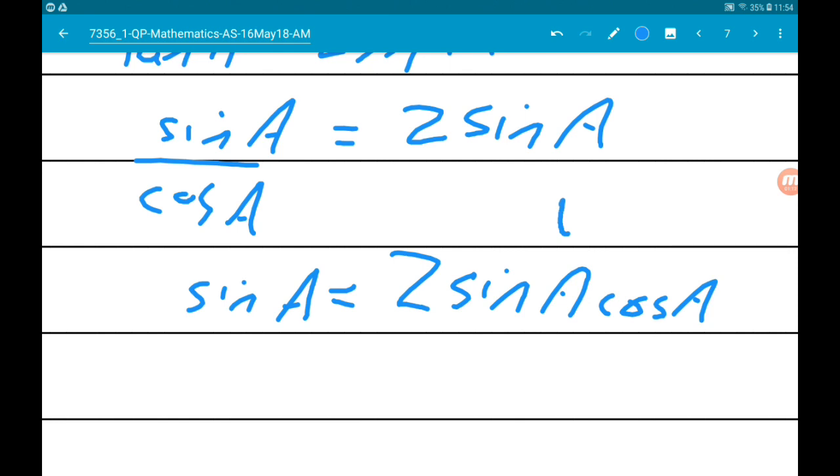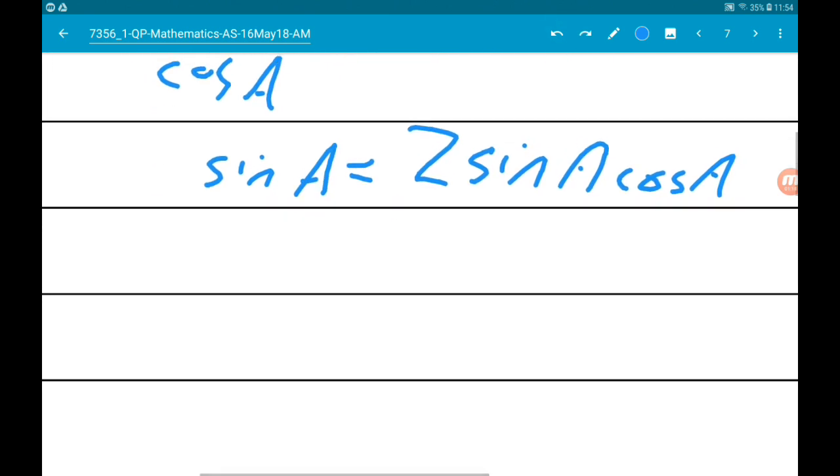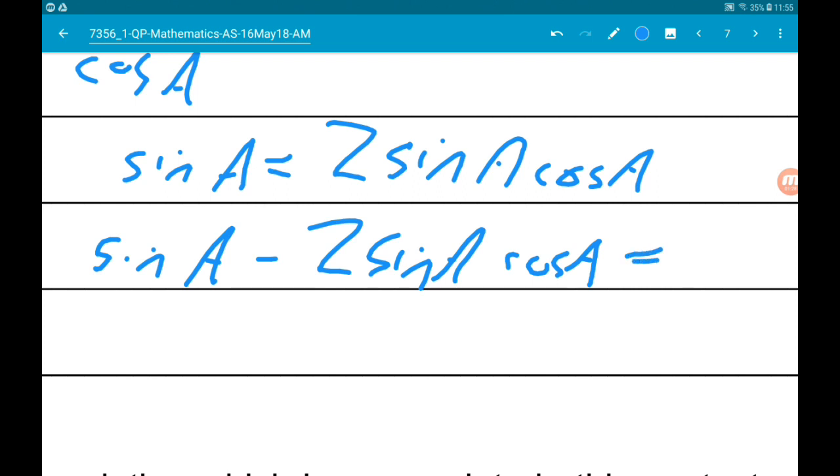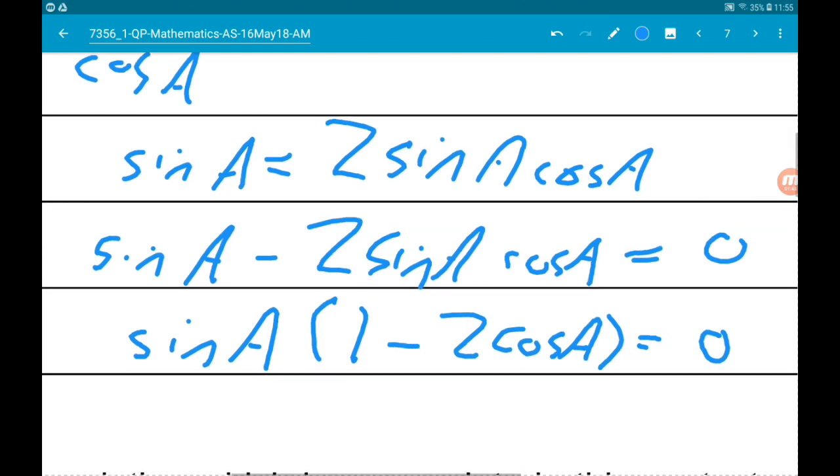Okay. Let's get everything on the same side. So sine of A minus 2 sine of A cos of A is equal to 0. Factorize. We get sine of A times 1 minus 2 cos of A is equal to 0.